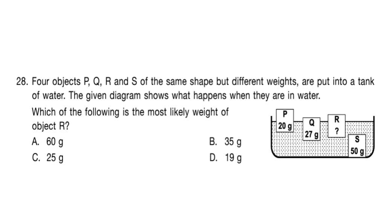Question 28. Four objects P, Q, R and S of the same shape but different weights are put into a tank of water. The diagram shows what happens when they are in water. Which of the following is the most likely weight of object R? Looking at the picture, the weight of R should be more than P but less than Q — so more than 20 but less than 27 grams. That is Option C: 25 grams.